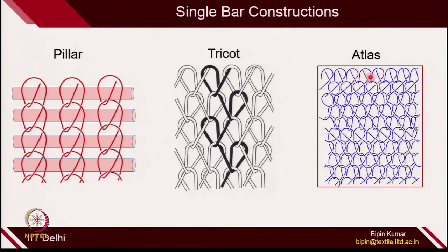The third category of single bar construction was atlas. In atlas, we have seen how the combination of closed loop and open loop were produced in the same structure.